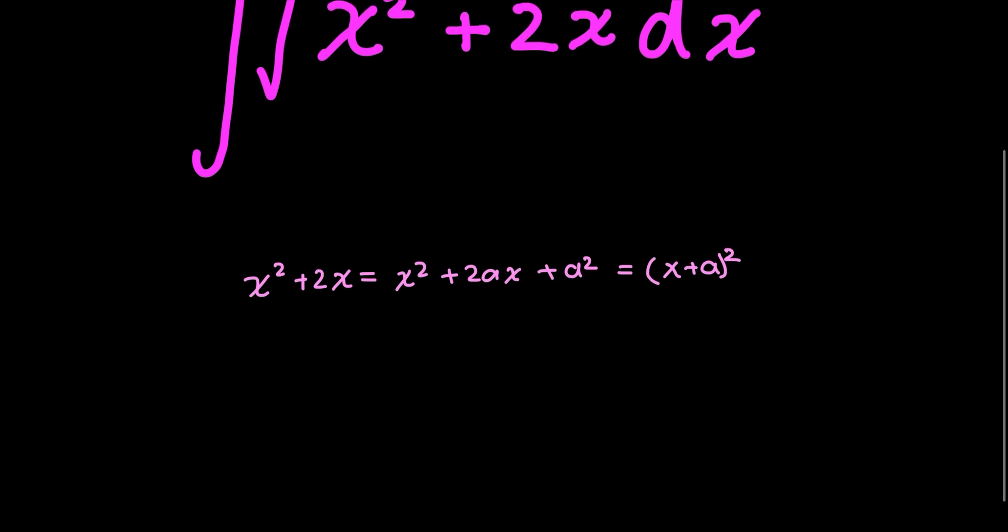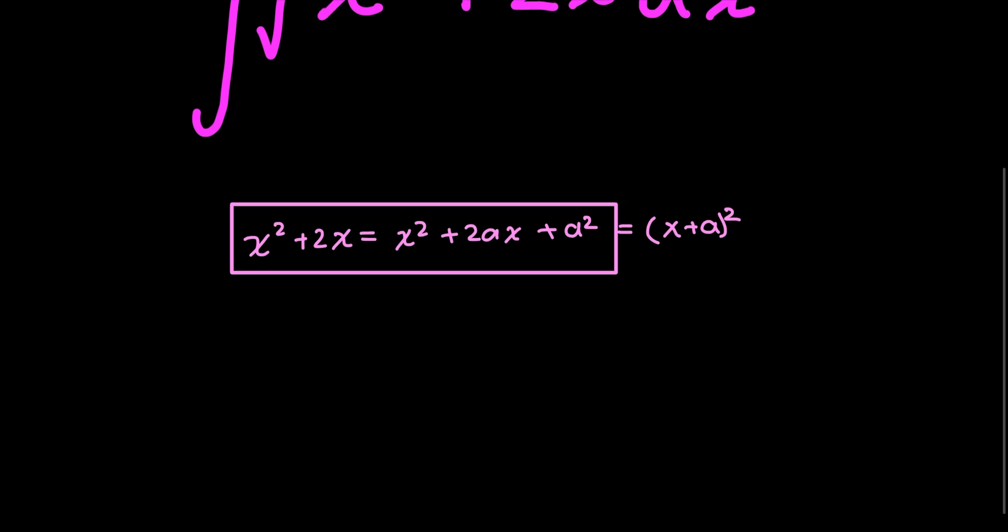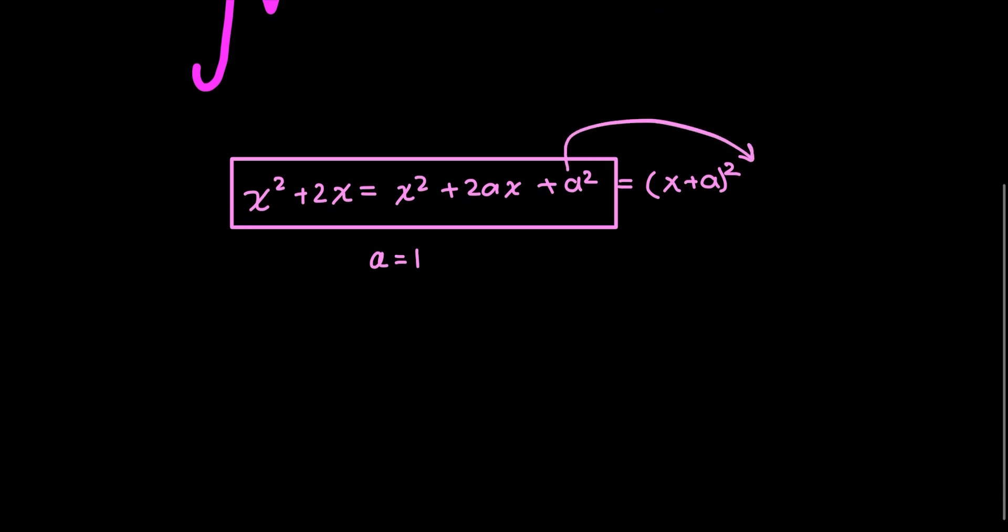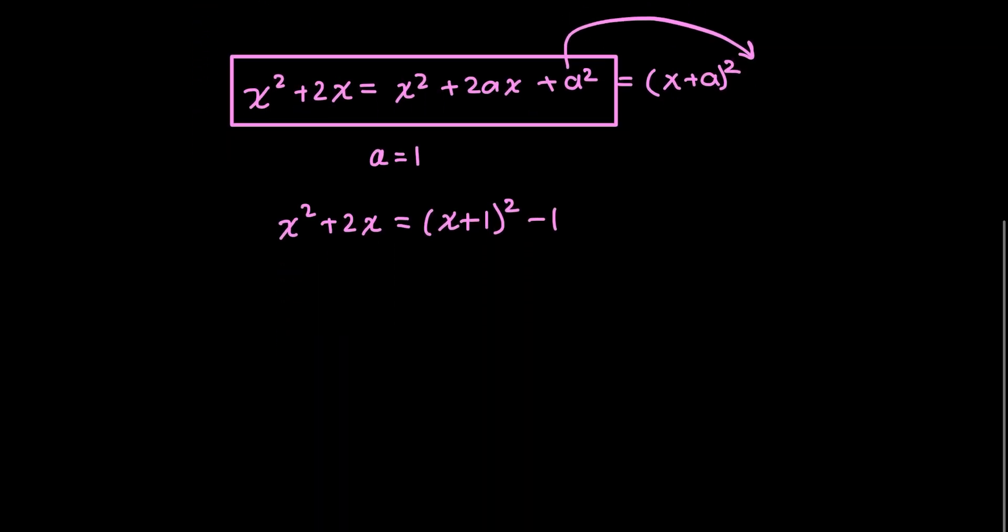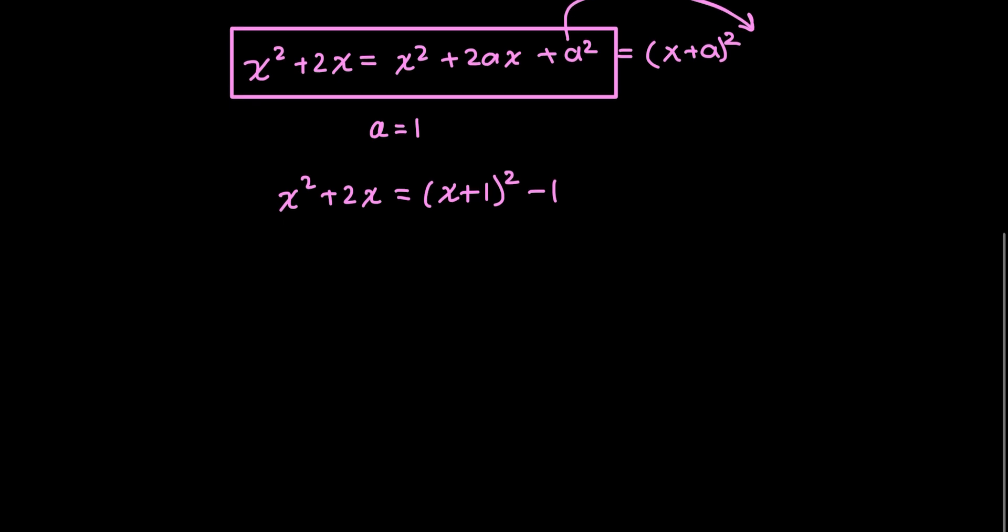So, set that x squared plus 2x equal to the form x squared plus 2ax plus a squared. And, of course, this is equal to x plus a squared. And so, just by looking at this part, I can figure out what a is. It's pretty simple. In this case, a is equal to 1, so x squared plus 2x is equal to x plus 1 squared minus 1. And now, I'm going to go back to my integral and into my square root and replace this.